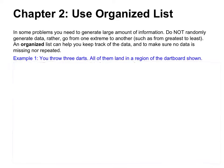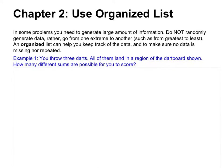Let's look at one example of how we can use an organized list. You throw three darts and all of them land in the region of the dartboard shown. How many different sums are possible for you to score?